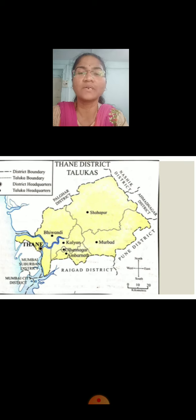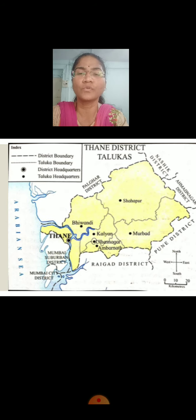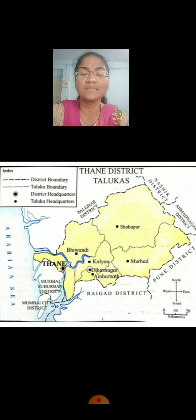Can you see this map clearly? I have zoomed it for you. This map is about Thane District Talukas. You can see Thane Headquarter which is shown by the dark circle — a dark dot which is encircled. Can you tell me the Talukas adjoining to your Thane District? Bivandi, Kalyan, Ullasnagar and Ambarnaar are nearby your Thane Taluka, or you can say Thane District. You can see Arabian Sea there.